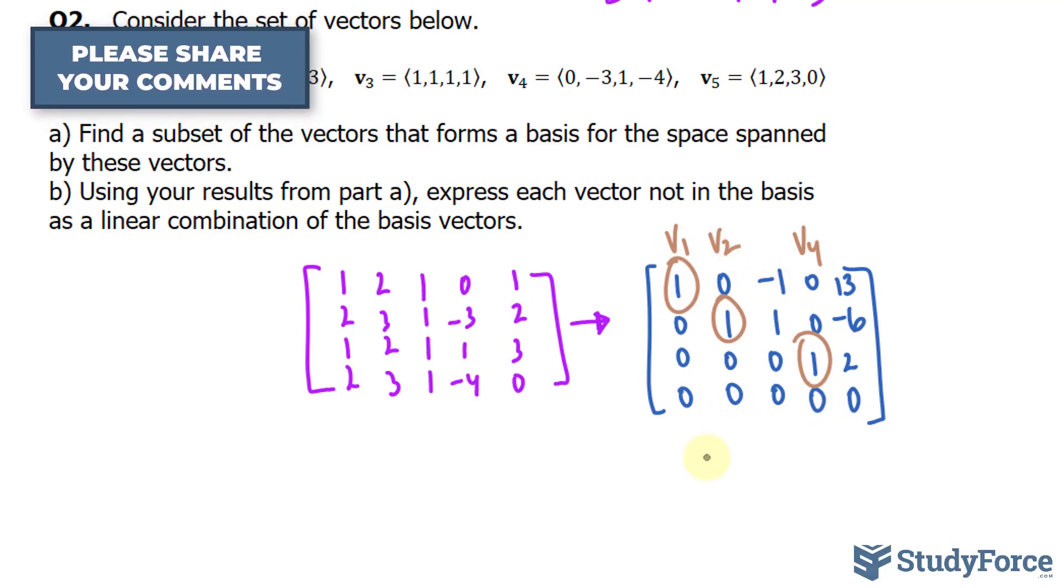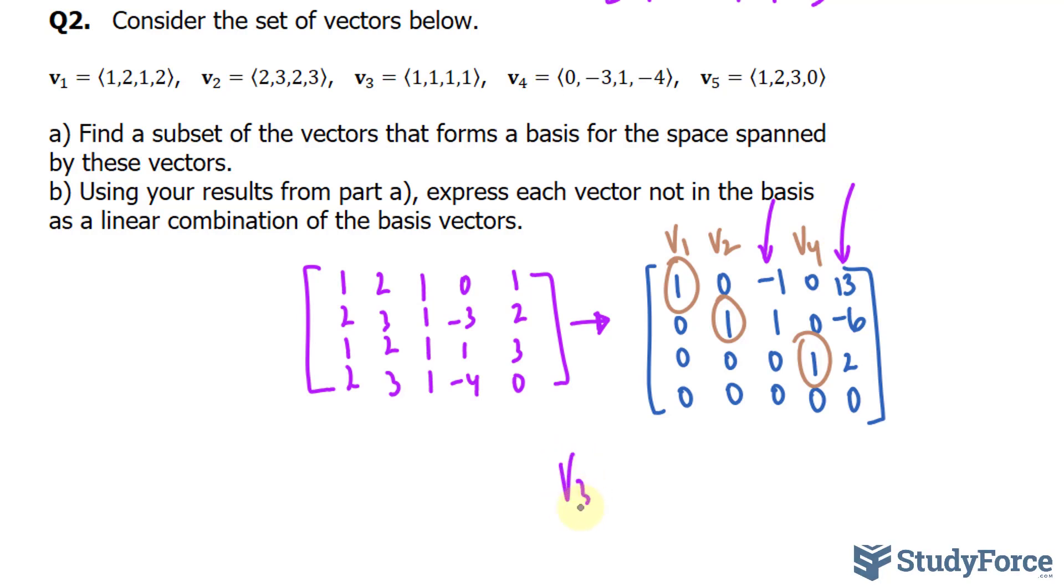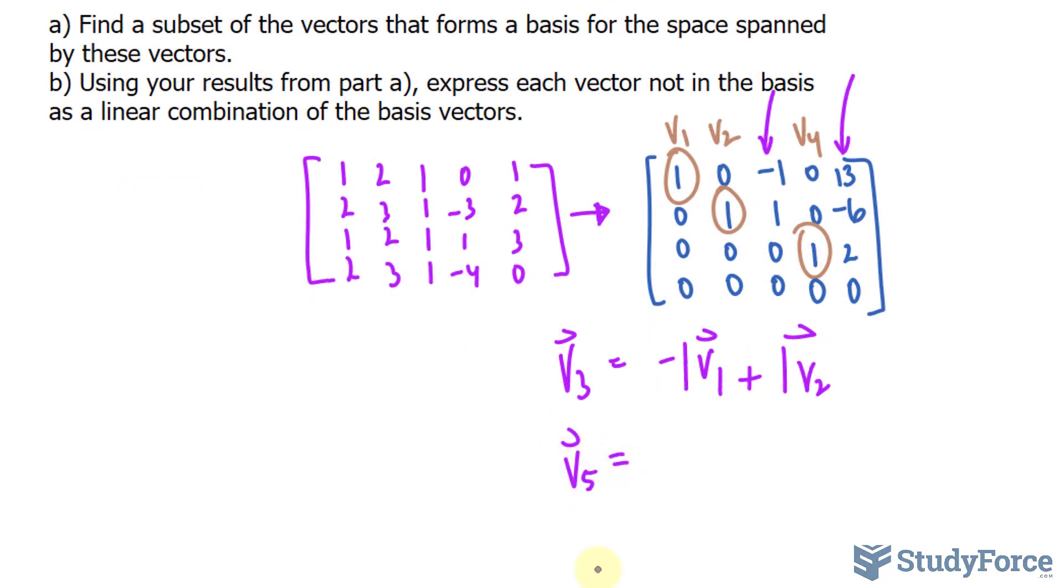Moving on to question B. Using the results, express each vector not in the basis as a linear combination. So what was not in the basis was this vector and that vector. That being said, we can write down V3, which was this vector, is equal to negative 1 V1 plus positive 1 V2. And for this one, V5, the vector, is equal to 13 V1 minus 6 V2 plus 2 V3.